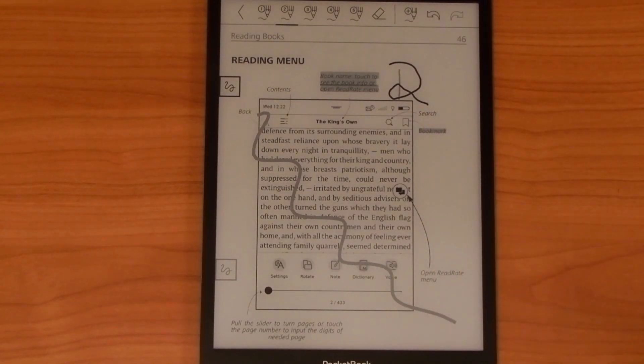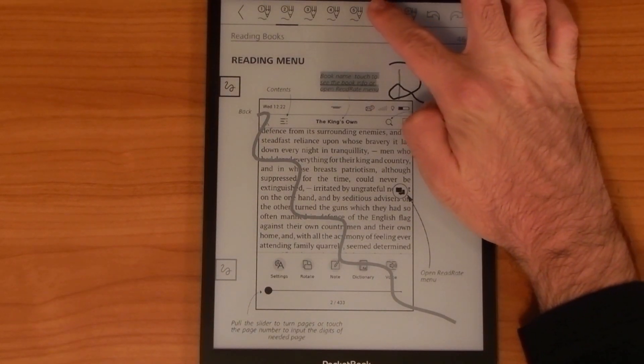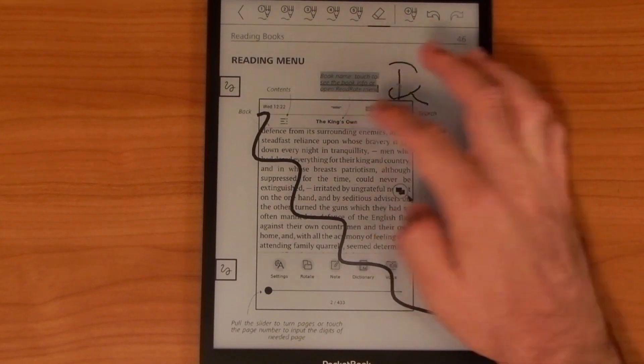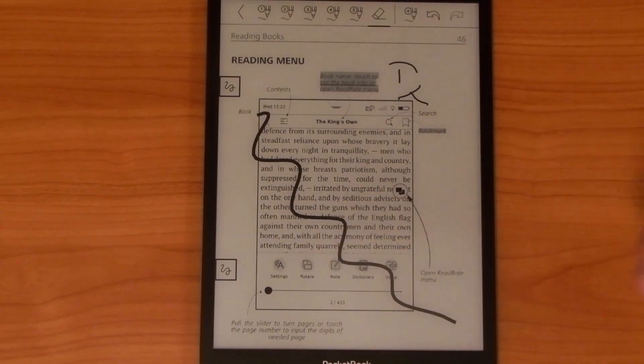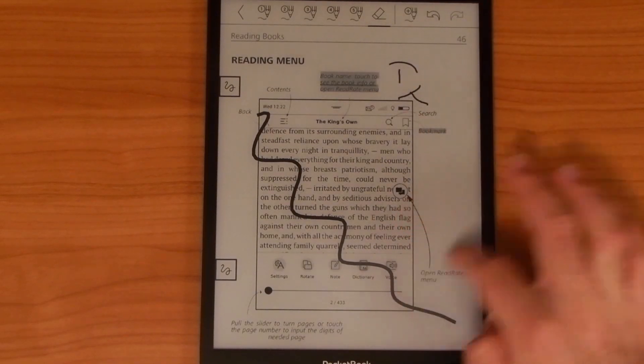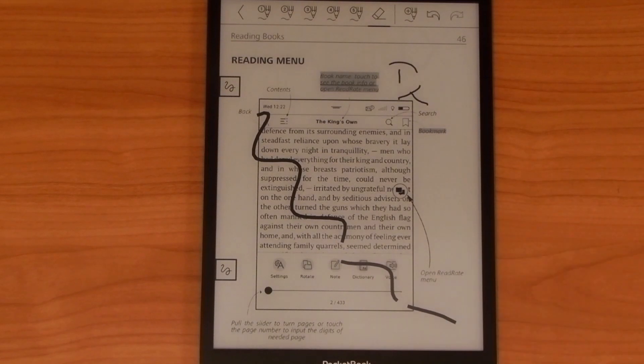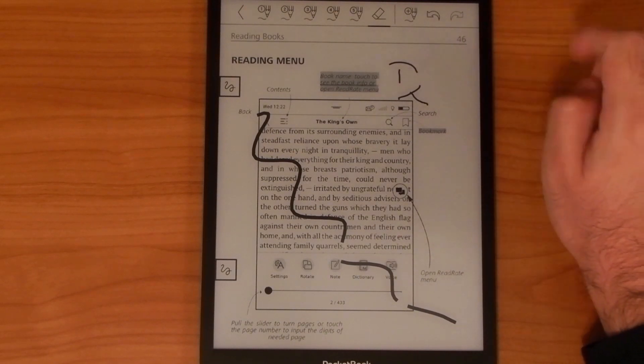But when you use the eraser tool, it becomes painfully clear that this just doesn't work. The eraser erases all lines you move your finger over, regardless what layer or grouping they're in. On the plus side, the undo and redo arrows work pretty well.